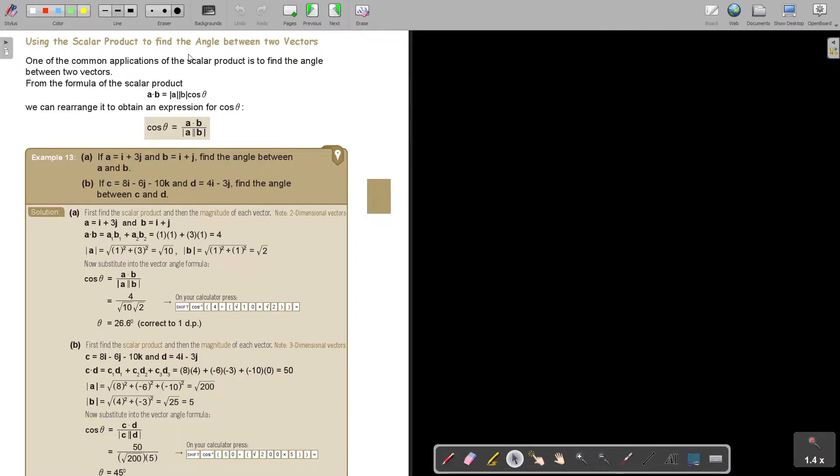Using the scalar product to find the angle between two vectors. One of the common applications of the scalar product is to find the angle between two vectors. From the formula of the scalar product, we can rearrange it to obtain an expression for cos theta. It's like we make cos theta the subject of the formula. So we're just going to divide this magnitude of the two on the other side. And that's what I basically did. I just made it the subject of the formula.